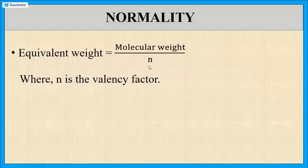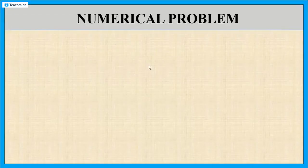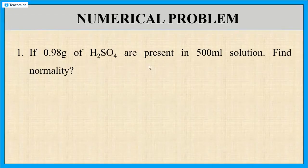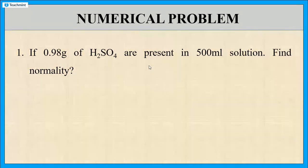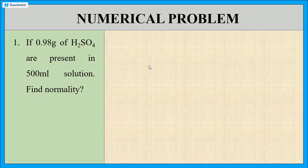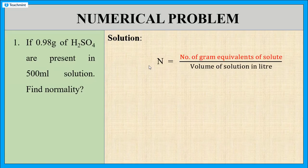Now let us solve some problems. First problem: if 0.98 grams of sulphuric acid are present in a 500 ml solution, find the normality. First, write down the formula: Normality N is equal to the number of gram equivalents of solute divided by volume of solution in litres.